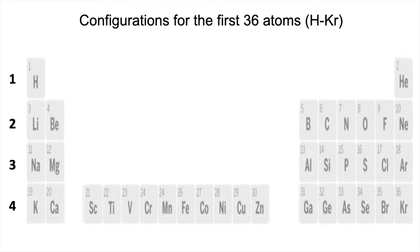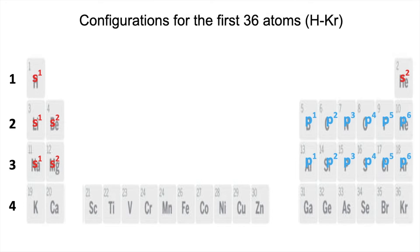Looking at configurations for the first 36 atoms: hydrogen is 1s1, helium is 1s2. Into the second shell: lithium is 1s2 2s1, beryllium is 1s2 2s2, then into 2p: boron through neon fills 2p1 to 2p6. Third shell: sodium is 3s1, magnesium is 3s2, then aluminium through argon fills 3p1 to 3p6. Fourth shell: potassium is 4s1, calcium is 4s2. Then the transition elements fill the 3d subshell: scandium is 3d1, titanium is 3d2, vanadium is 3d3.